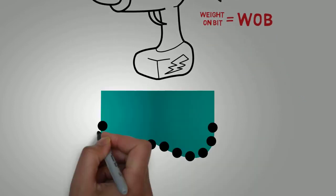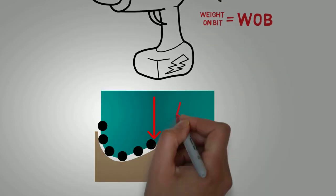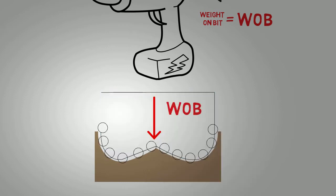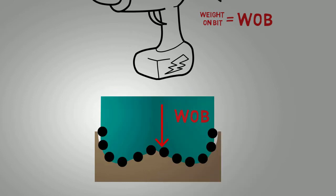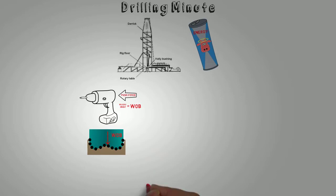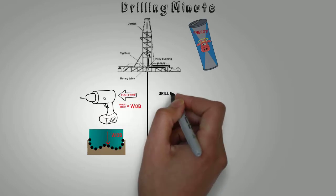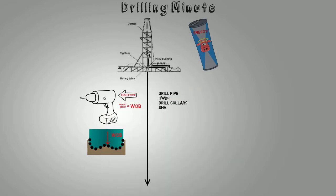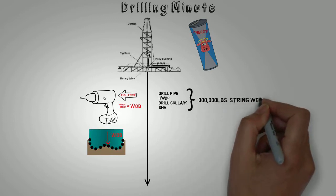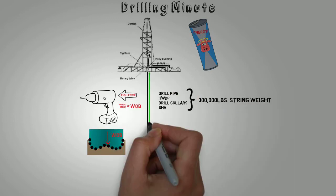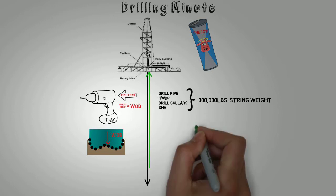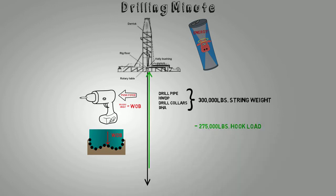Just like pushing on the drill, weight on bit applies force to drive the bit ahead into the formation. But where does that weight come from? If you added up the weight of all the components of the drill string, you would have what we call the string weight, which is usually hundreds of thousands of pounds. But not all of this is used to drill. Most of it is suspended from the derrick, which is known as the hook load. In fact, the structure of the derrick is actually designed to support this heavy load. The total string weight minus the hook load is the weight on bit.